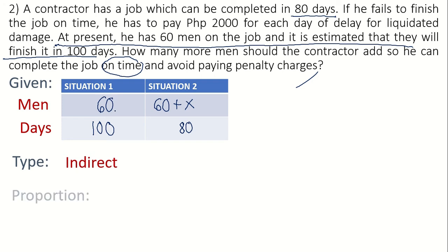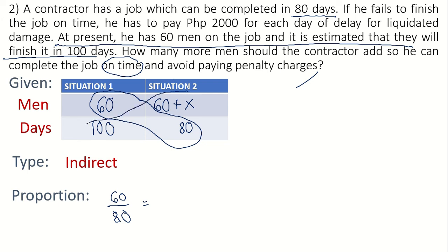For indirect proportion, the arrangement is diagonal. We form the proportion as 60 over 80 equals 60 plus X over 100. Unlike direct proportion where each column forms one ratio, in indirect proportion, quantities in diagonal positions form each ratio.